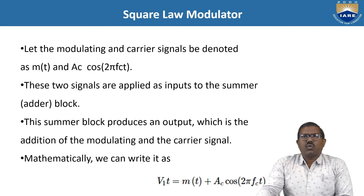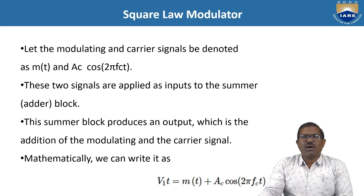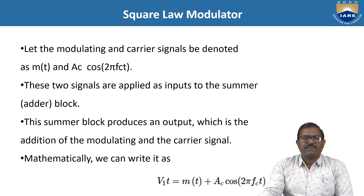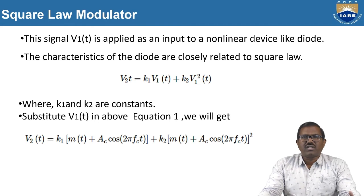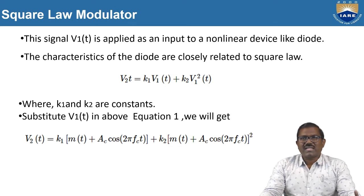The modulating signal and carrier signals, M(t) and C(t), are applied as inputs to the summer block. This summer block produces an output which is the addition of the modulating and carrier signals. Mathematically, V1(t) = M(t) + Ac·cos(2π·fc·t). This signal V1(t) is applied as input to a non-linear device like a diode. The characteristics of the diode are closely related to the square law. Using this square law characteristic of the diode, V2(t) = K1·V1(t) + K2·V1²(t), where K1 and K2 are constants.